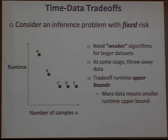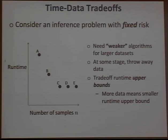In general, as you give more and more data, you need some mechanism to back off to a weaker algorithm. If you use the same algorithm with more data points, runtime increases and risk decreases. What you need is a mechanism to back off to simpler algorithms — the idea being that if you can process a larger dataset more coarsely, you might still obtain the same desired risk but with less computation.